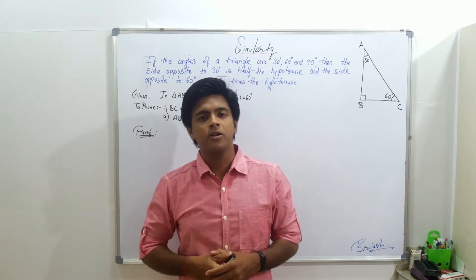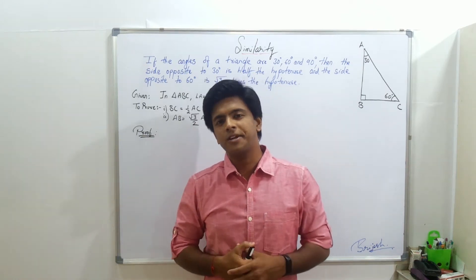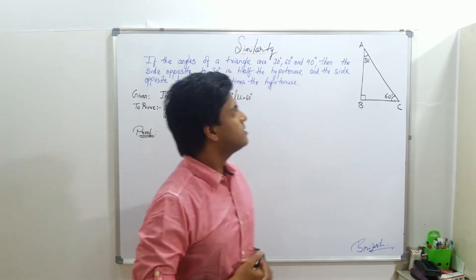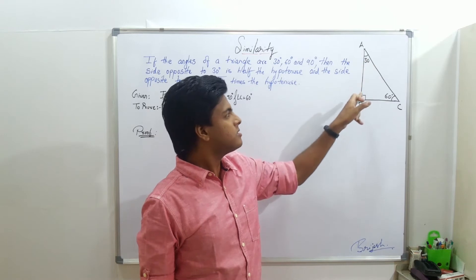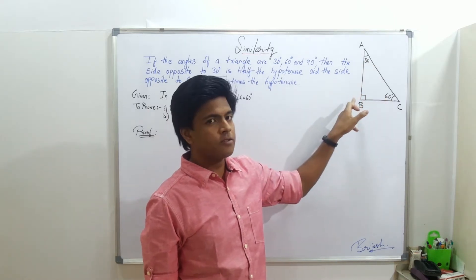Hello guys and welcome back. Today I will be explaining the 30, 60, 90 degree theorem. In this theorem we have a triangle in which one angle is 30, another is 60, and the third one is 90 degrees.